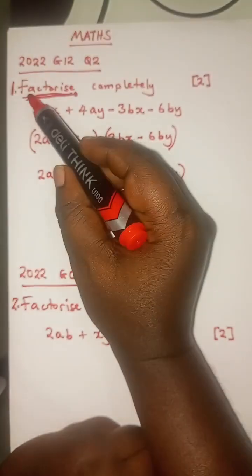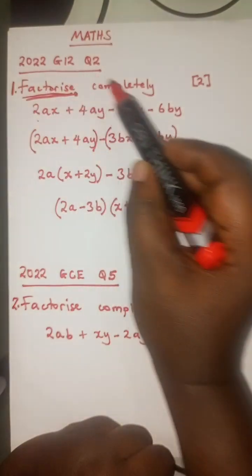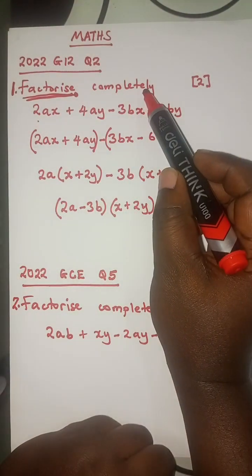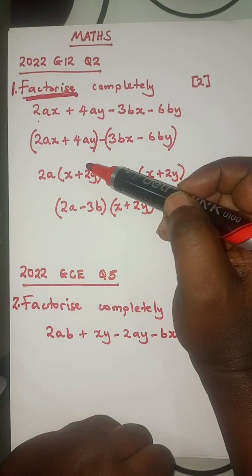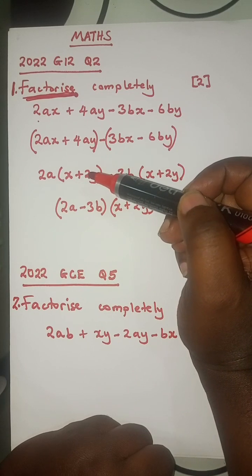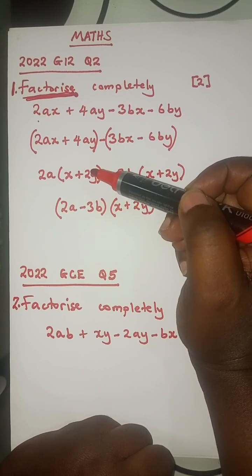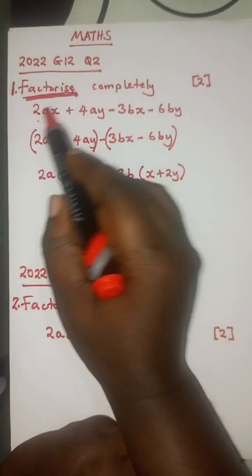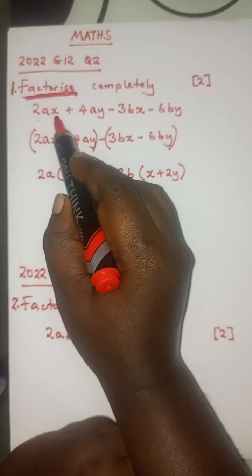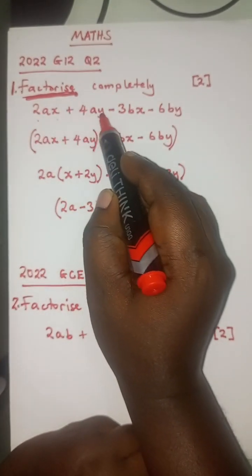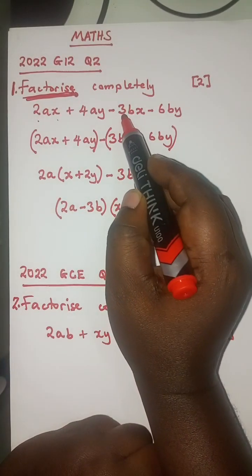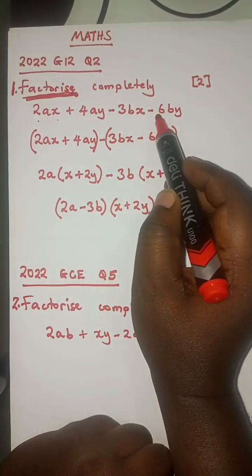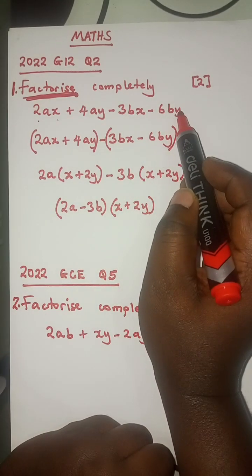So the first question says: factorize completely. The question reads: factorize completely 2AX plus 4AY minus 3BX minus 6BY.